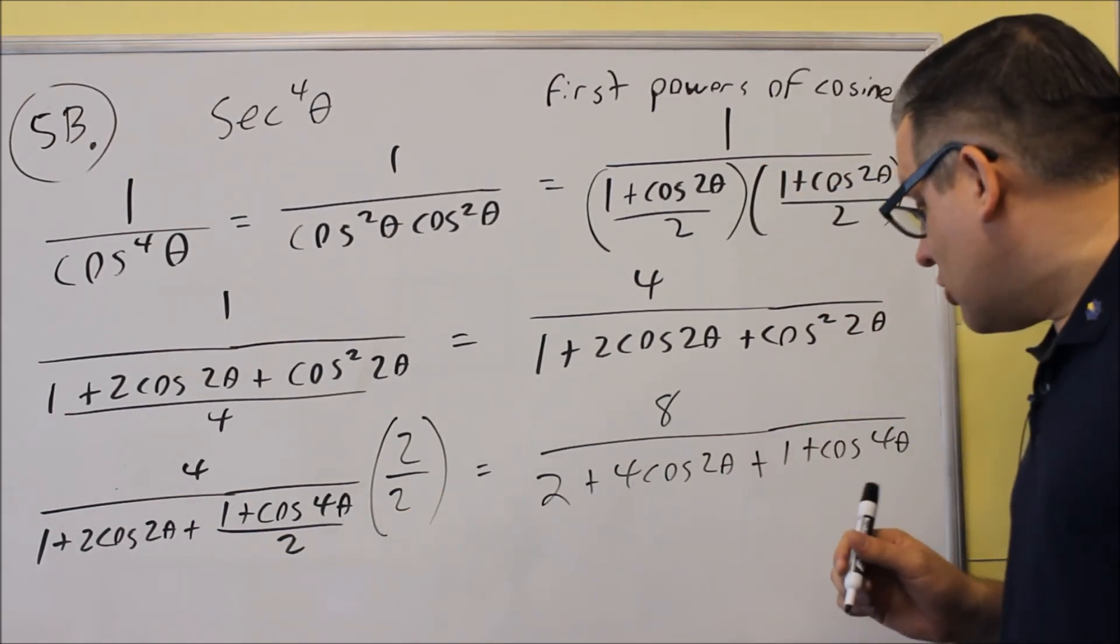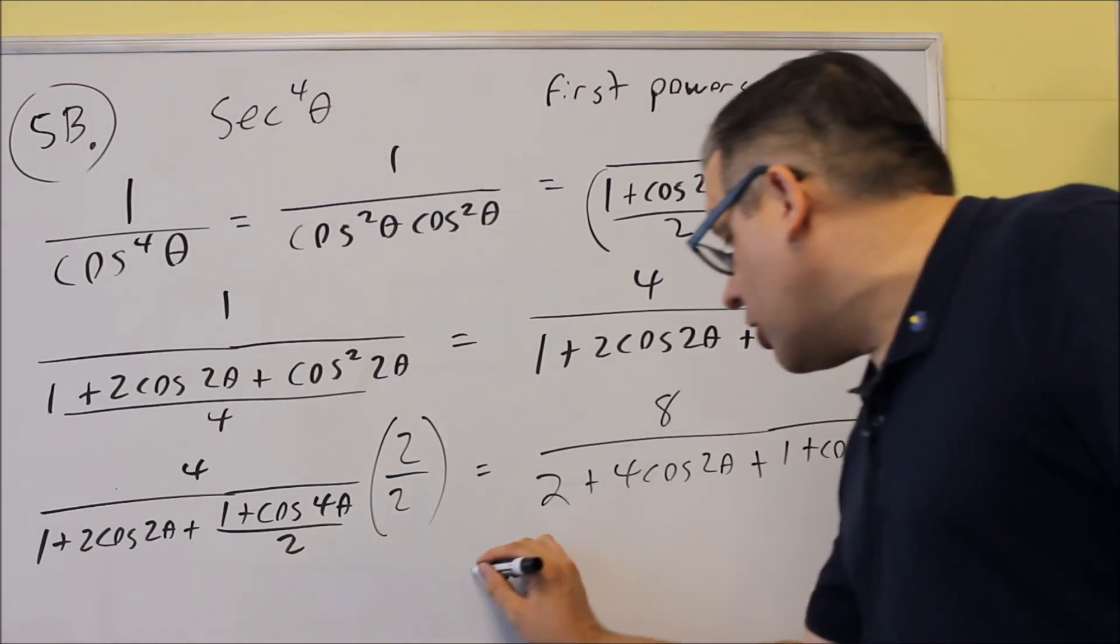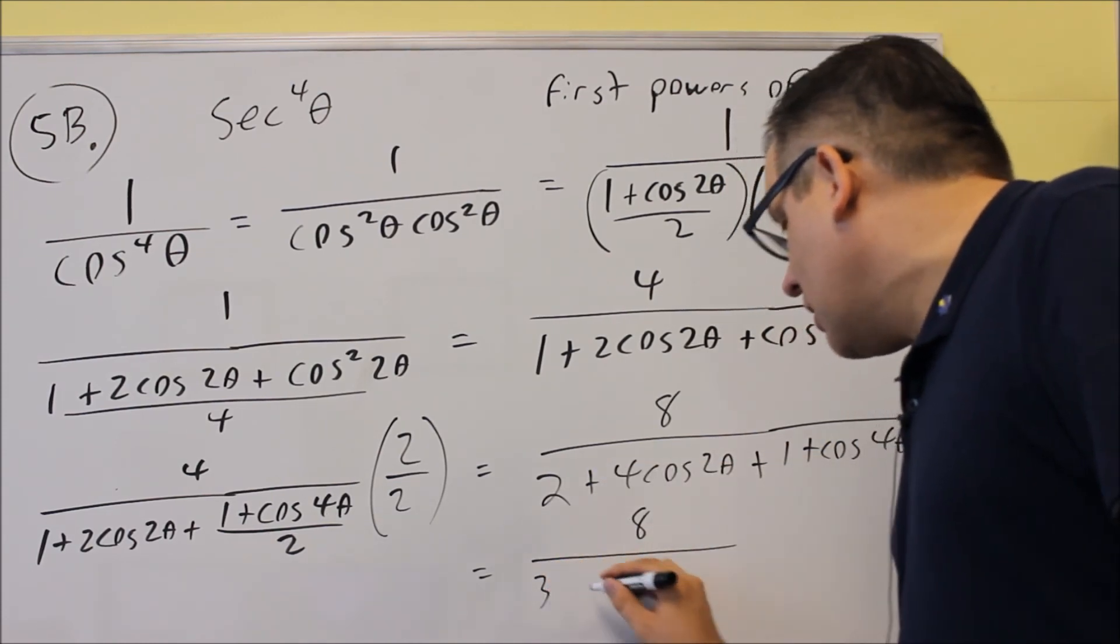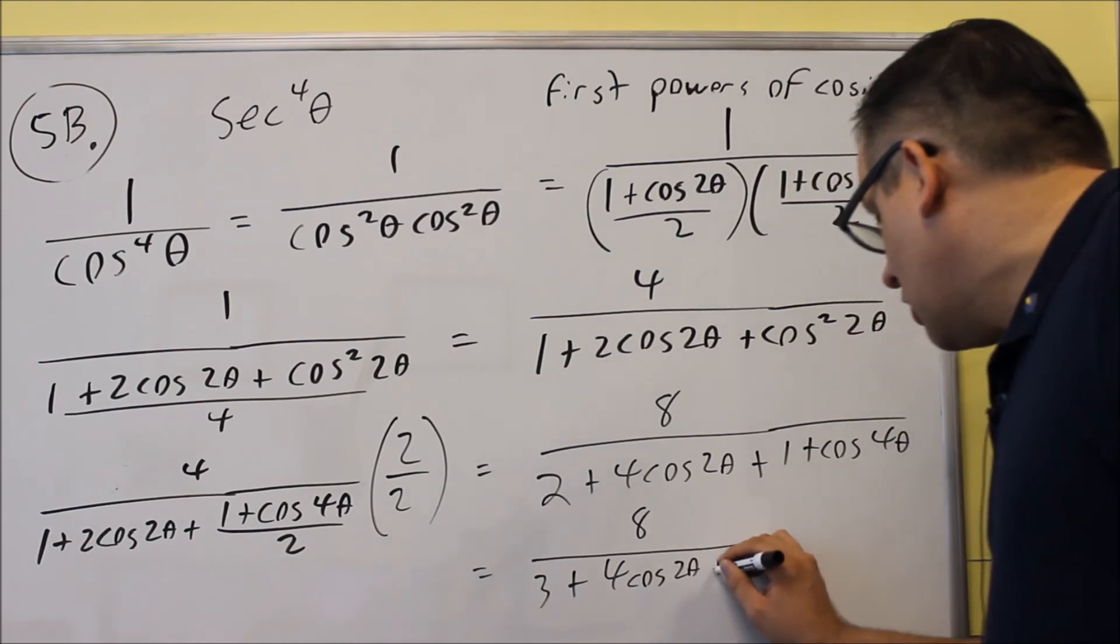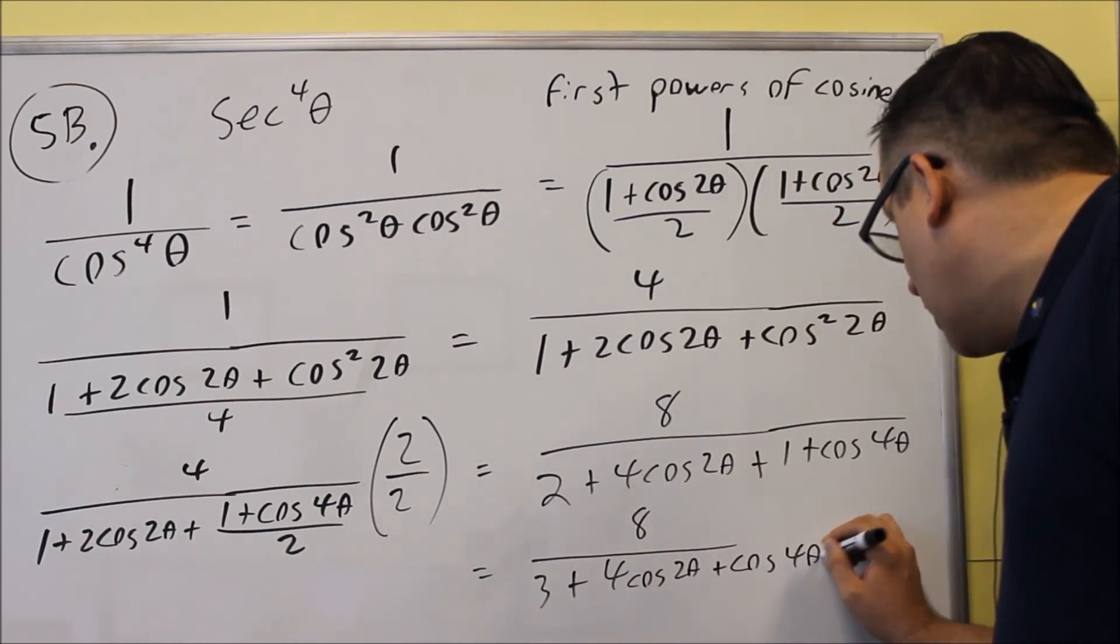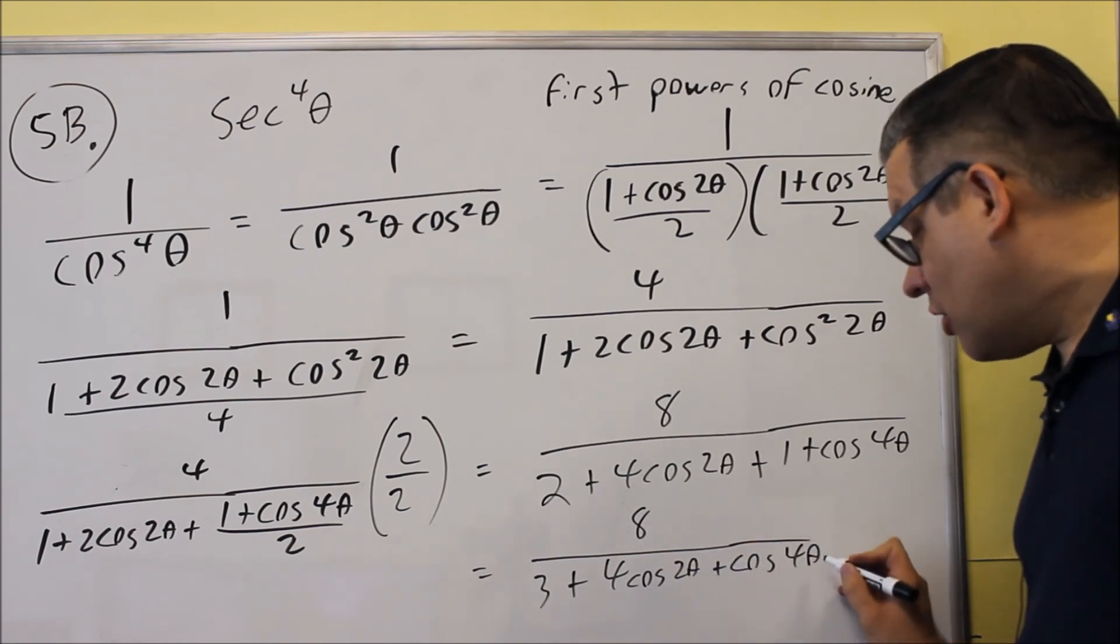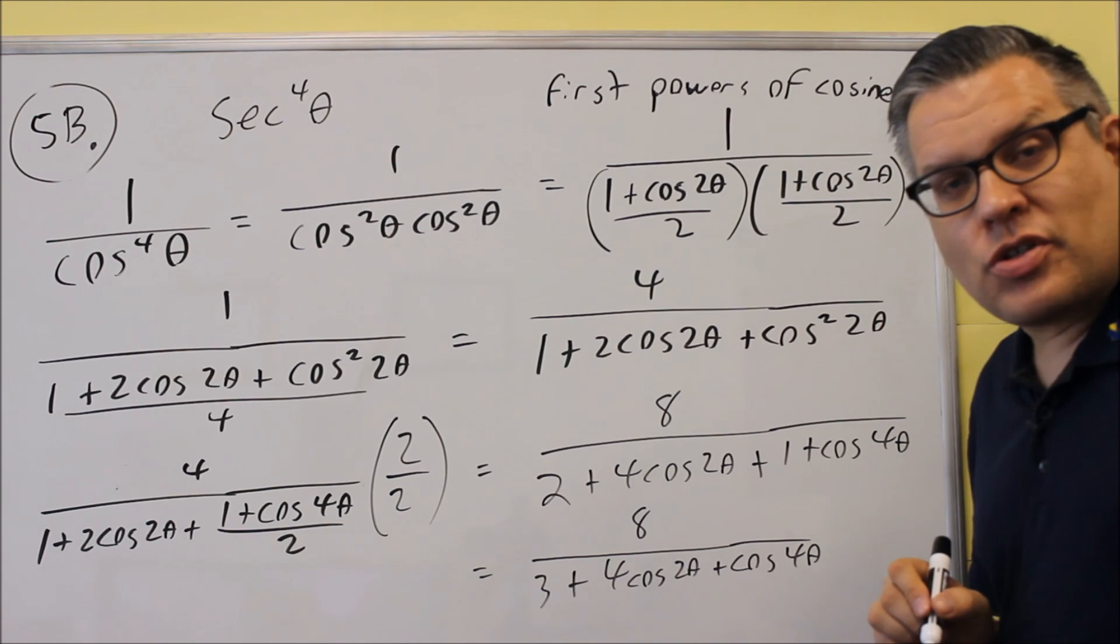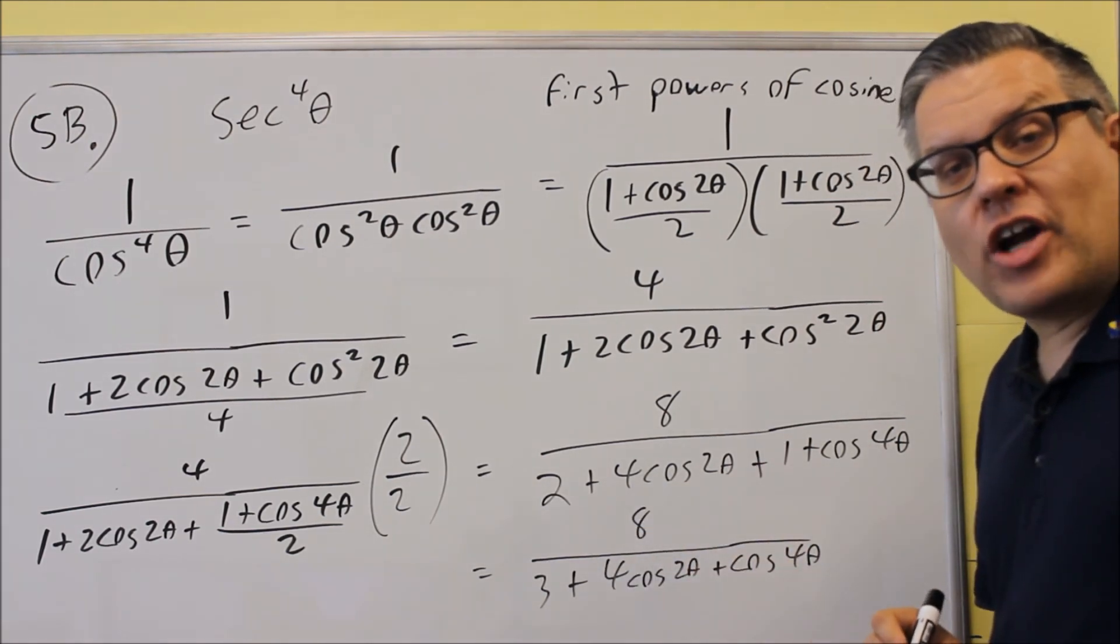The last thing we'll do is just add like terms together. It doesn't matter the order in which you write those down below. You'll have 8 on top. 2 plus 1 is 3. And then plus 4 cosine 2 theta plus cosine 4 theta. Because the inside ones are not the same, we have a 2 theta and a 4 theta. These are not like terms, so we can't combine those or simplify anymore. And so this last thing down here will be your final answer.